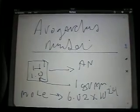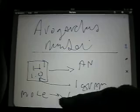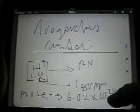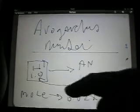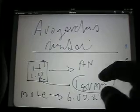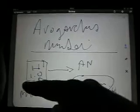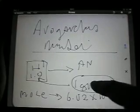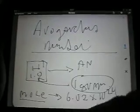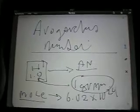So 6.02 times 10 to the 24 atoms of hydrogen will give me approximately a gram of hydrogen. So you can see how I've made that conversion from atomic mass units to gram through this concept known as the mole or Avogadro's number.